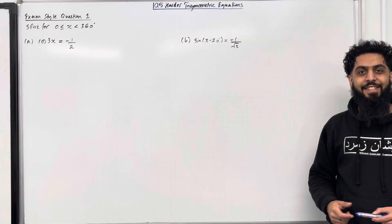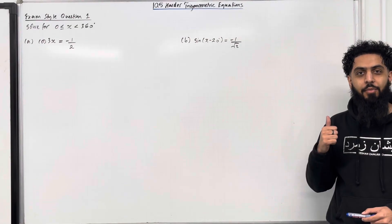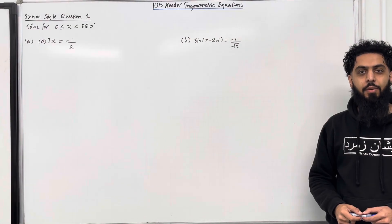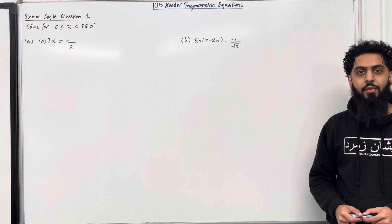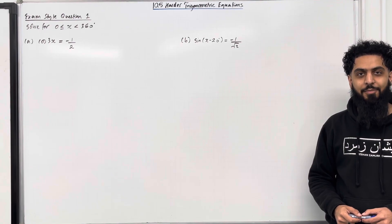Welcome back. In this teaching video, I'll be looking at 10.5 Harder Trigonometric Equations. 10.5 represents Chapter 10, Section 5 of the Pearson A-Level Maths, Pure Maths Year 1 Textbook.